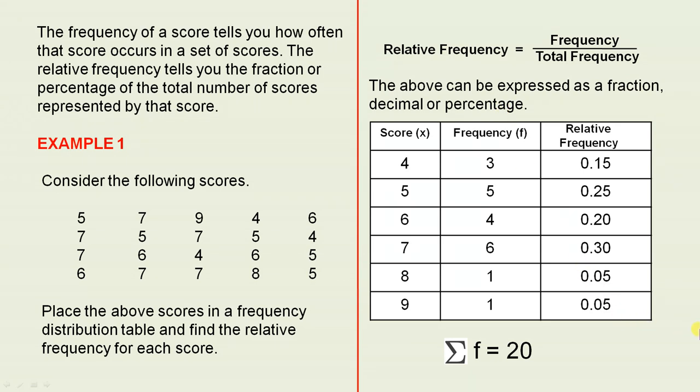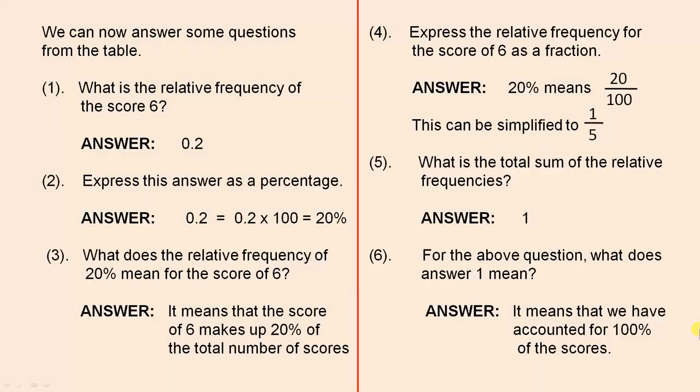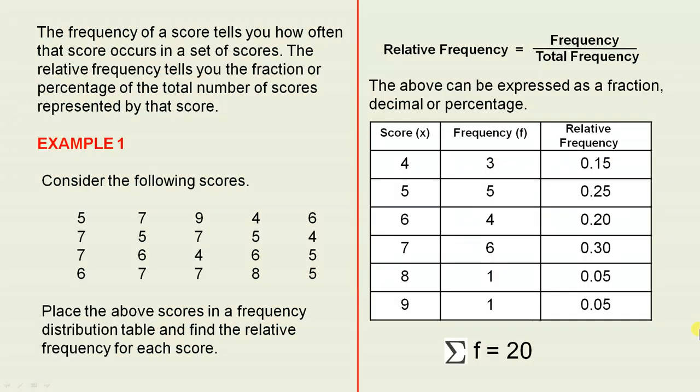Let's have a look at some simple questions now on this particular table. We can now answer some questions from the table. What is the relative frequency of the score 6? So we go back to the table, and we see that the relative frequency of the score 6 is 0.2.